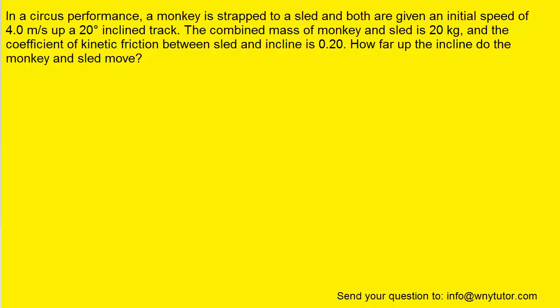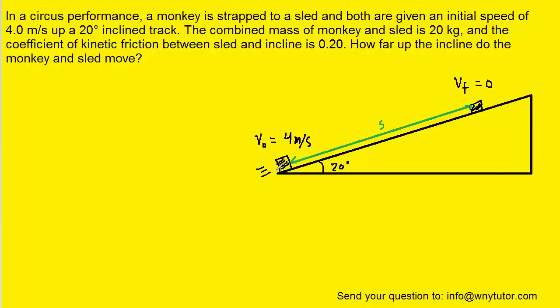We're going to go ahead and draw a picture to get the problem started. So here we have the monkey and sled being launched up the ramp with an initial speed of 4 meters per second. They're going to slide up the ramp until they momentarily come to rest, and so they'll have a final velocity of zero. Our job is to figure out the distance that they slide up the ramp, and we're going to go ahead and call that distance s.